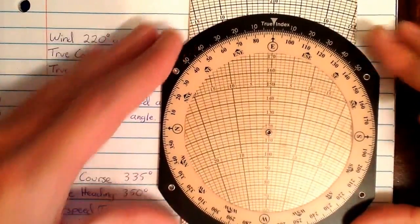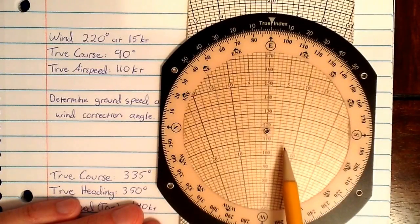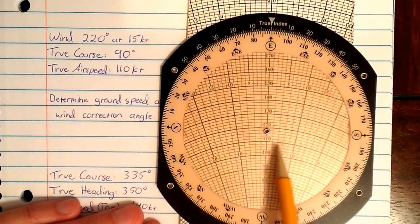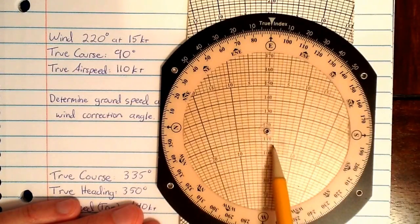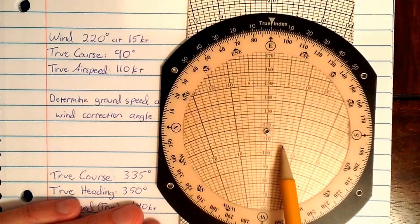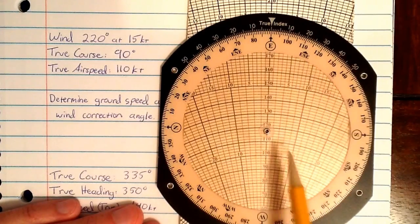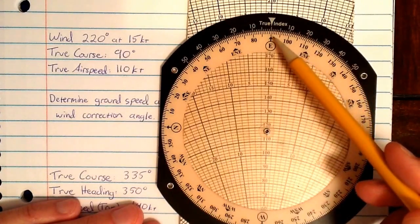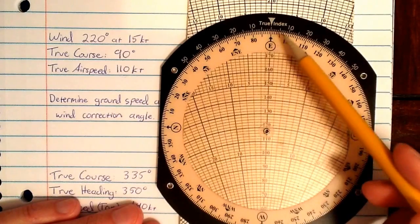Now the card in airplane mode is giving us some information. It's giving us a wind correction angle, which can be measured as degrees off from this center line, in this case 2, 4, about 5 degrees to the right, which would result in a heading of 90 plus 5, or 95 degrees.